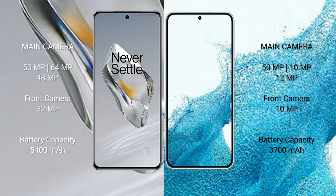OnePlus 12 has a rear quad camera setup: 15MP plus 64MP plus 48MP and 4MP, and a 32MP front camera. Samsung Galaxy S22 comes with a rear triple camera setup: 15MP plus 29MP plus 29MP, and a 29MP front camera.